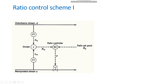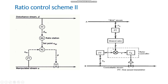The two flows are measured and sent to a divider, where their ratio is formed. This ratio is given to the ratio controller, which compares it with the ratio set point. The output of the ratio controller goes to the control valve, which increases or decreases the flow to maintain the desired ratio. This completes scheme one of ratio control.